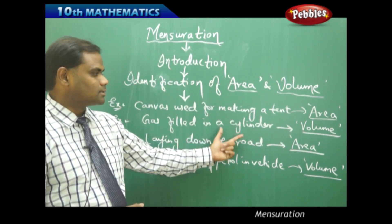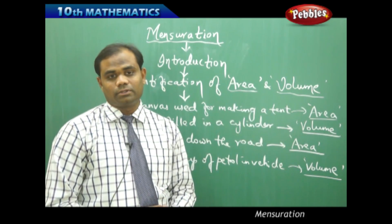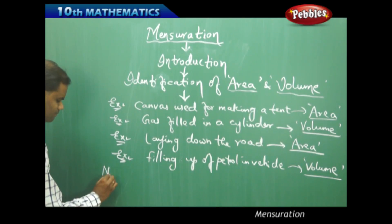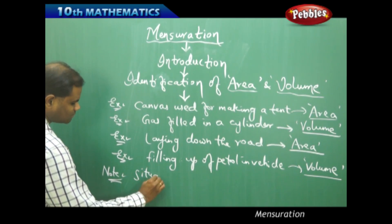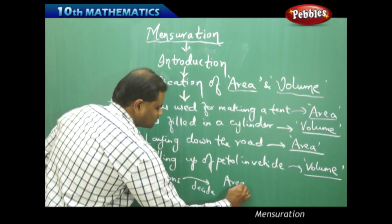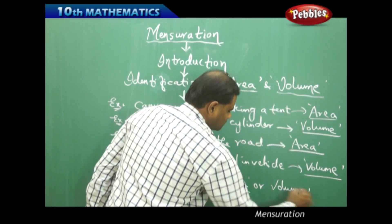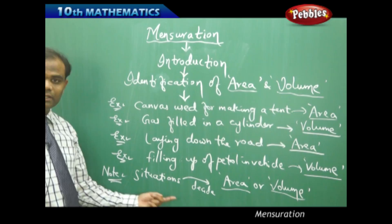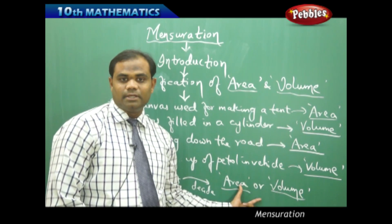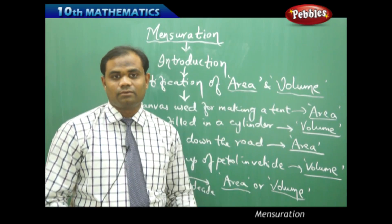Therefore, before we start the actual topic of mensuration, identification of area and volume is the most important concept. The learning outcome of this session is that situations decide whether the given problem is about finding the area or the volume. It is purely the situations which decide whether the given problem is about finding the area or the volume — this is the introduction to mensuration connected with area and volume.